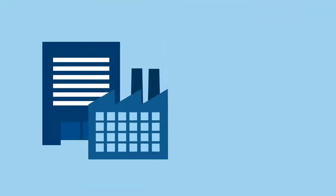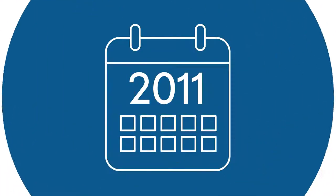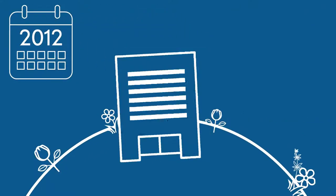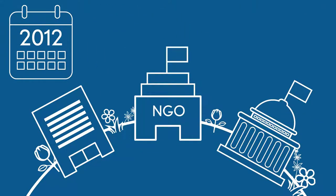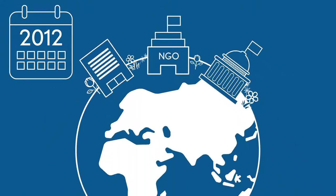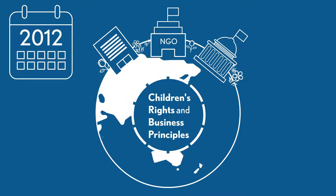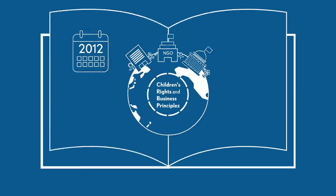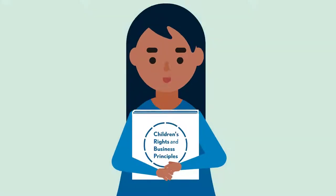Business has a big impact on children's lives. Since 2012, business, NGOs, and governments have backed a global standard: the Children's Rights and Business Principles. These principles define how business should respect and support children's rights.